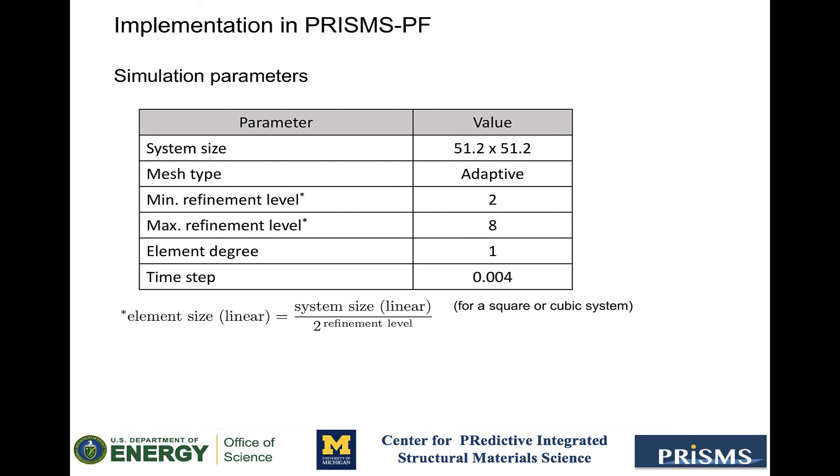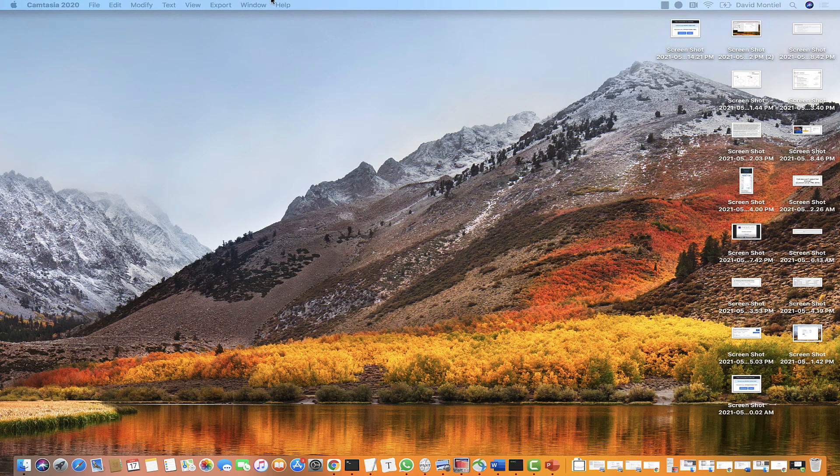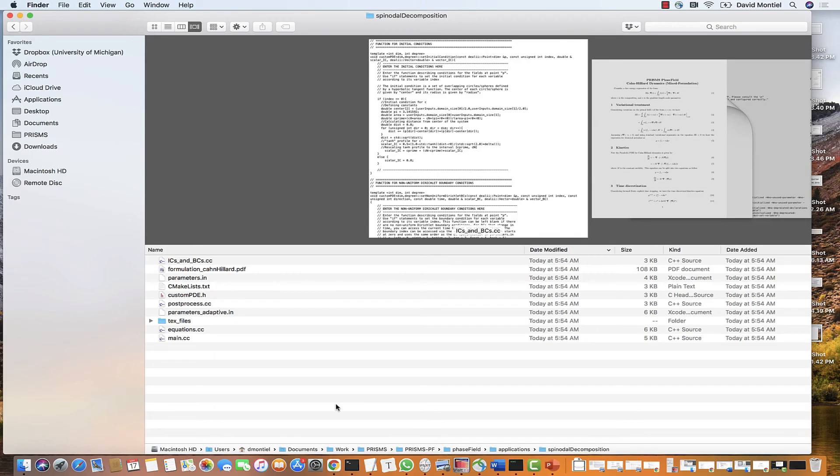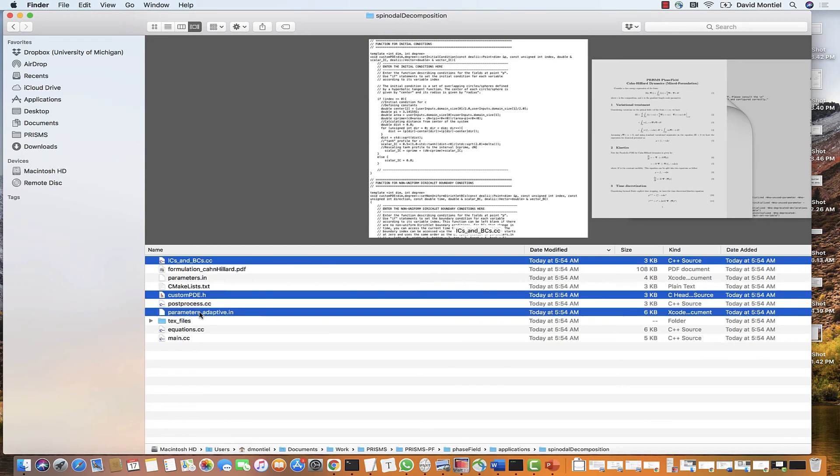Okay, let's go to the implementation. The first thing we're going to do is copy the code and parameters files from the nucleation and growth example into a new application folder called spinodal decomposition. Out of these files, we only need to modify custom pde.h, the parameters file, and ICs and BCs. We are going to leave the equations and post-processing files intact because we are using the same free energy and dynamics as the nucleation and growth example.